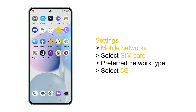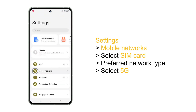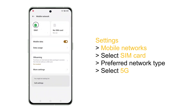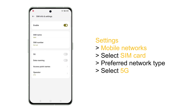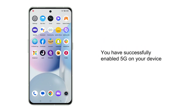The next thing to do is turn on 5G. The steps may vary slightly depending on your phone model and operating system, but here are some general guidelines: go to Settings, then Mobile Networks, select your SIM card, go to Preferred Network Type, and select 5G.